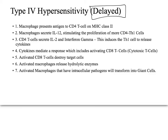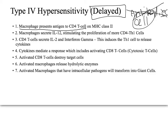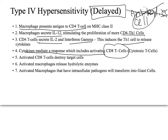Type 4 is delayed because it is not mediated by antibodies — it is cell mediated. The macrophage presents an antigen to the CD4 T cell on MHC class 2, and the macrophage secretes interleukin-12, stimulating T cell proliferation. The T cell then secretes interleukin-2 and interferon-gamma, inducing helper T cells to release cytokines, which includes activating a cytotoxic T cell. The activated cytotoxic T cell then destroys the specific target — the antigen.